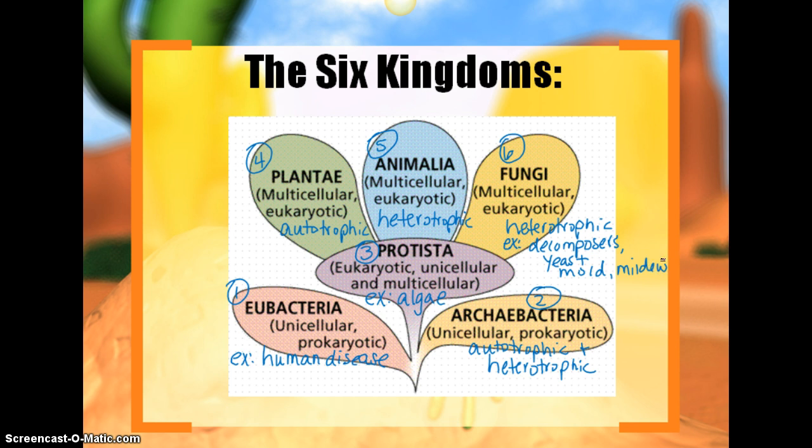That's where we're going to end today. You should have covered the three domains and the six kingdoms. Make sure when you're looking at the domains and kingdoms that you have identifying pieces for each — that you can identify them based on the traits given.